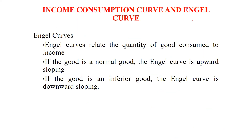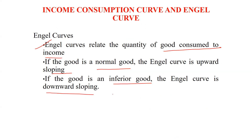Income consumption curve and angel curve — what are the similarities and differences? Angel curve relates the quantity of a good consumed to income. If the good is a normal good, the angel curve is upward sloping. If the good is an inferior good, the angel curve is downward sloping.